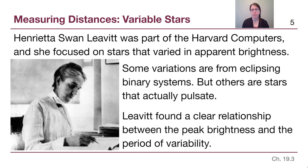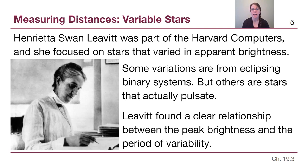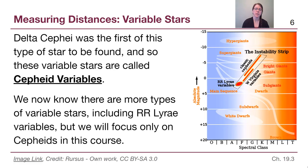Leavitt found a clear relationship between the peak amount of brightness that we could see and the period of variability. Because she was studying these variable stars within the Magellanic Clouds — the Large and Small Magellanic Cloud, which are dwarf galaxies outside of our own Milky Way — all of the stars in her study were the same distance from us, allowing her to compare apparent brightness to true brightness. Delta Cepheid was the first of this type she found, and so the whole category is called Cepheid variables.